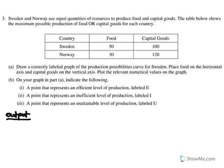For part A, it wants us to draw the PPC for Sweden and label its food and capital goods output, then label a point that's efficient, inefficient, and attainable. I'm going to put mine right here. It wants us to put food on the horizontal axis and capital goods on the vertical. Here's our PPC.